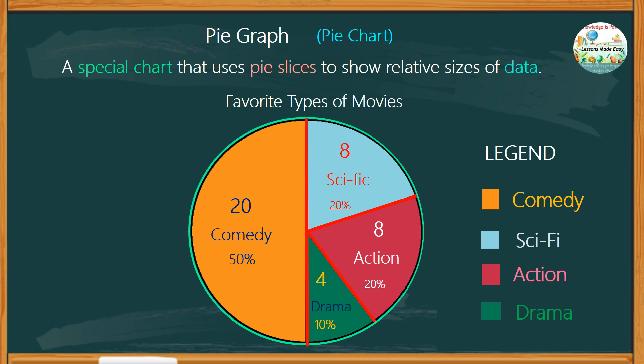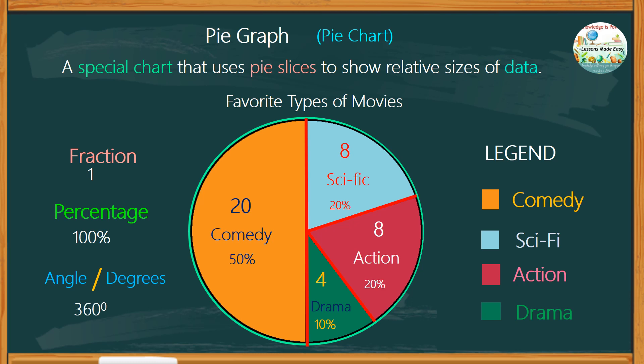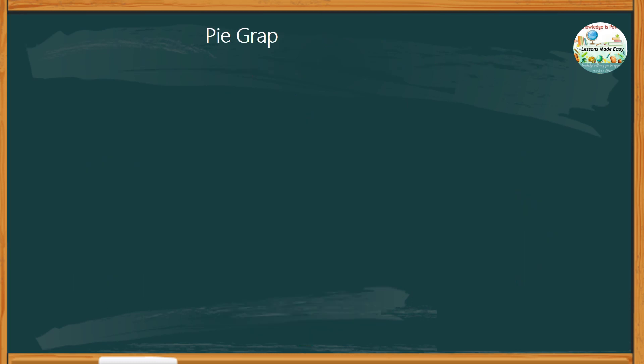Pie charts are best used to compare parts of a whole. It means each category can be expressed as a fraction, percentage, and even angle, or the measurement in degrees. One whole circle makes up 100% and 360 degrees.